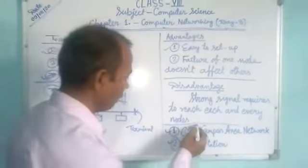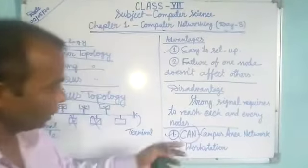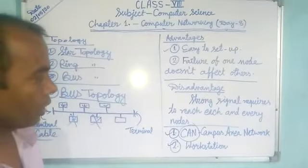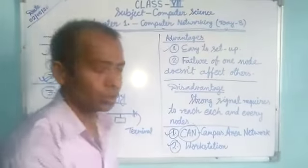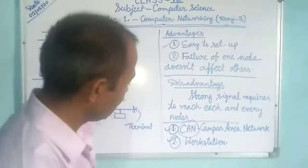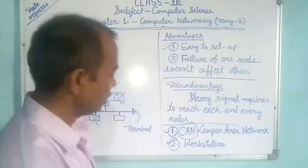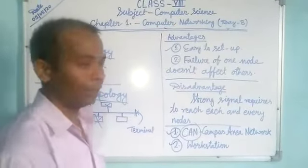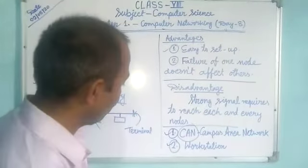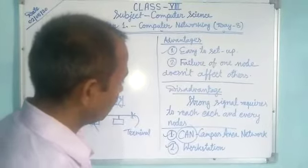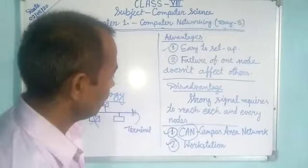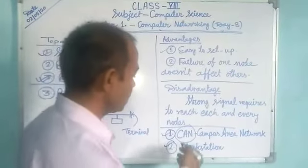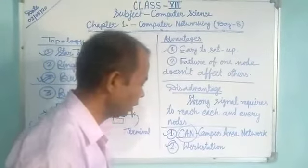Let's discuss two terms related to computer networking. One is CAN - Campus Area Network. Whenever many computers are connected in a very small geographical area, such as a University Campus or School Campus, that type of network we can call CAN, Campus Area Network.